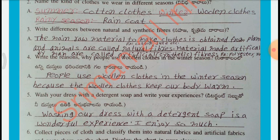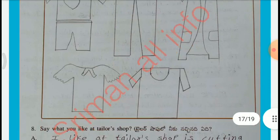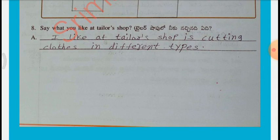Write the reasons why people use woolen clothes in winter: woolen clothes keep our body warm. Wash your dress with a detergent soap and write your experiences: washing our dress with detergent soap is a wonderful experience. Collect pieces of cloth and classify them into natural fabrics and artificial fabrics, paste them on a chart, and display the chart in your classroom. Draw pictures of different types of dresses. Say what you like at a tailor shop: I like cutting clothes in different types.